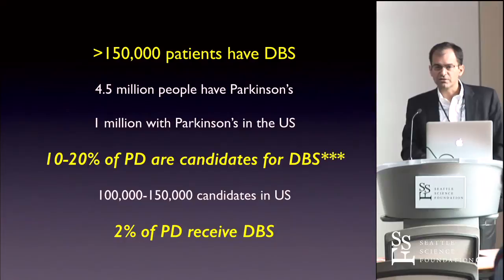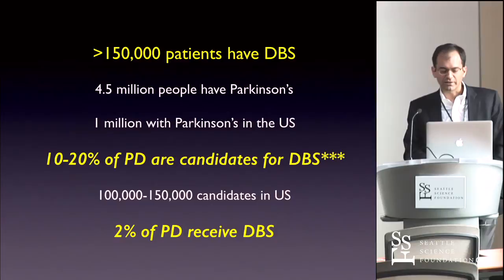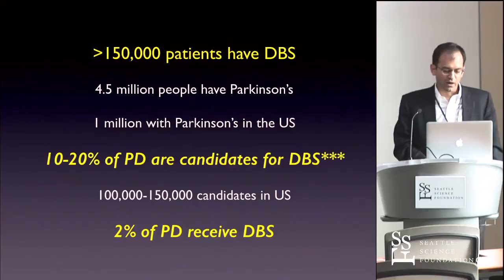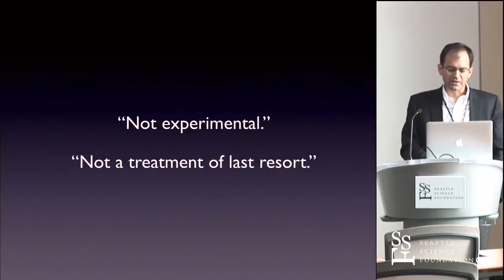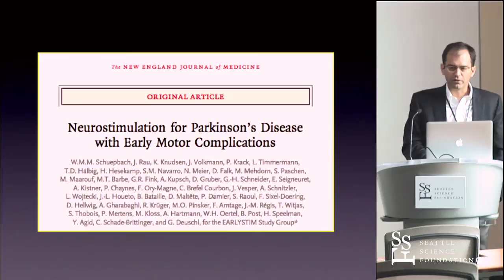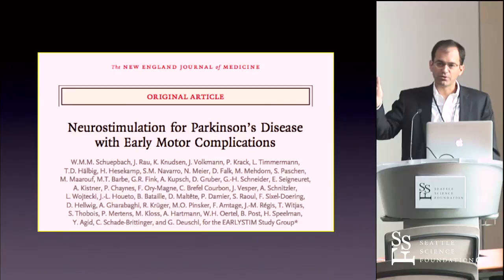To date, over 150,000 patients have been treated with this worldwide. Based upon the previous FDA labeling for DBS for advanced Parkinson's, between 10 and 20 percent of patients with Parkinson's are candidates for DBS, though only about 2% are receiving it. Medicare has recognized that deep brain stimulation is currently underutilized. This is not an experimental treatment. There's been a trial in Europe looking at earlier time points for intervention, with an average age of 51, where patients randomized to surgery did better quality of life, and those randomized to no surgery wanted surgery by the end of the trial.